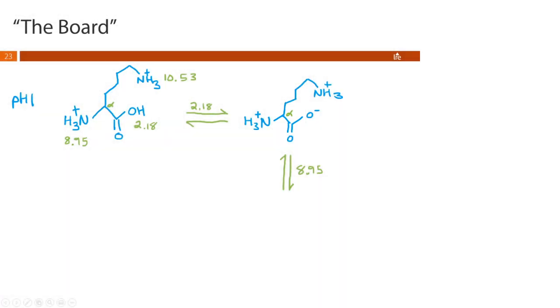So at 8.95 as we approach 8.95 we're gonna start removing one of the protons from this alpha amine group. We're gonna get something that looks like this right here. We're gonna lose one of those protons. Already lost the proton on our carboxyl group. But we still have a positive charge on our side chain.